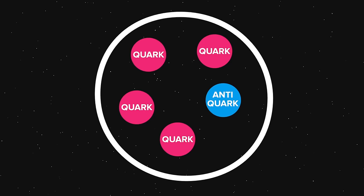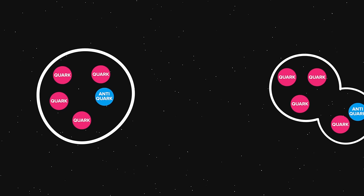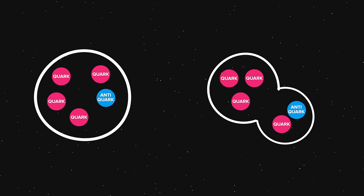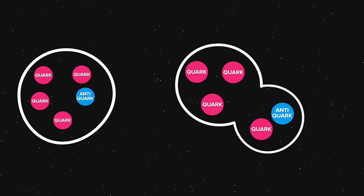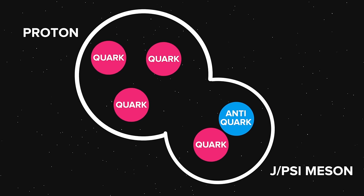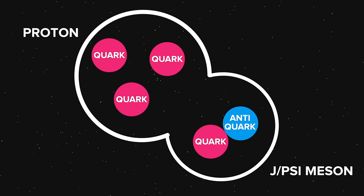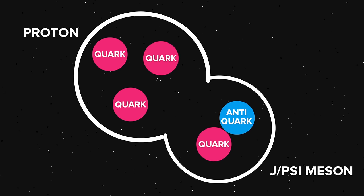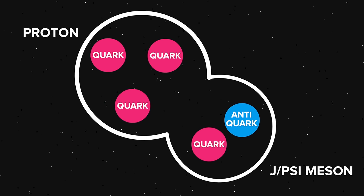However, another possibility is what we might call a nuclear molecule, although that terminology can be confusing. In the molecule case, a J/psi meson and a proton were made, but they were made stuck together, like two marbles connected with Velcro. Either configuration is possible, and the data does not yet pick one over the other.